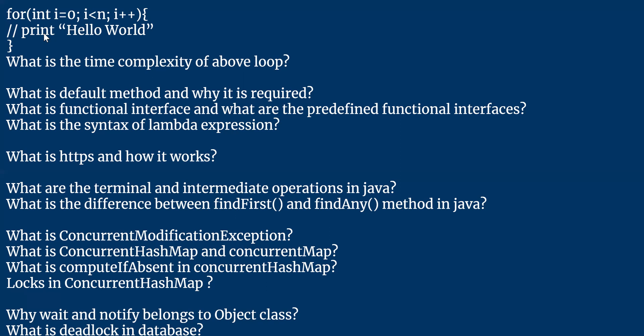Do you know what the ACID properties are in a database? ACID stands for Atomicity, Consistency, Integrity, and Durability. Atomicity means your transaction should be atomic. Consistency means your transaction should be consistent — it should not be the case that now the result is true, but next time for the same operation it returns something else. It should be consistent across all operations.